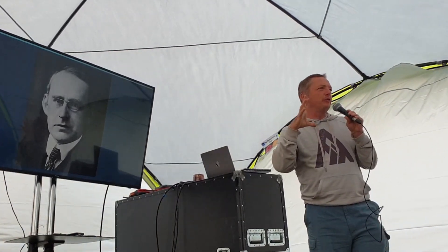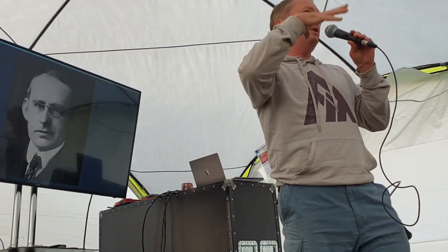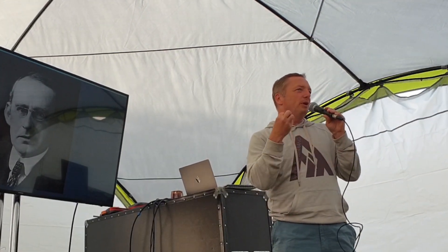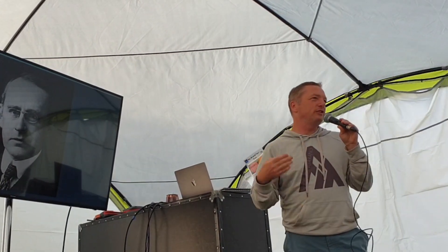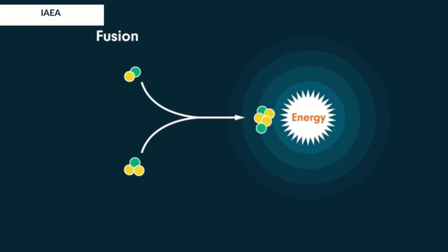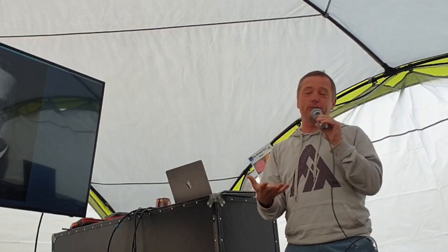Up until then, the leading theory was the contraction theory — that stars were contracting under gravity and that contraction was providing the energy, making them shine. The pressure created by gravity was doing that. But that's part of the answer — it's not enough energy. It doesn't work. This must be part of the answer but it doesn't work. And he said, well, perhaps the contraction squashes hydrogen into helium and that's where the energy is actually coming from. He was the first person to say that radiation pressure must be pushing back against gravity, and it's actually those two things interacting with each other that provides the energy.